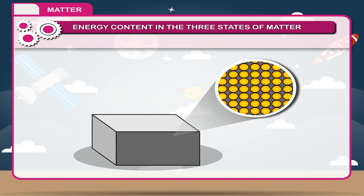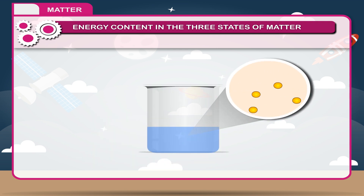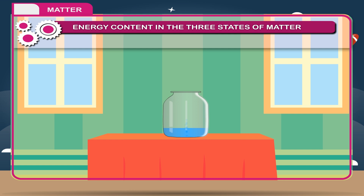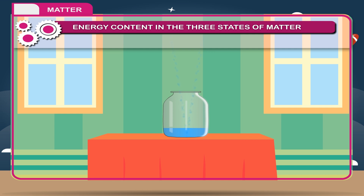Solids have the least amount of energy; these particles are held very tightly together. Liquids have more energy than solids, so they can take the shape of the container. Gases have more energy than liquids, so their particles spread out to fill the entire space of the container. Gas particles have so much energy that they cannot keep still — they fly around in all directions.